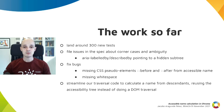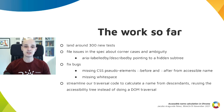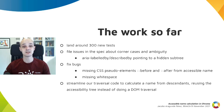We fixed bugs. The most visible one was about CSS pseudo-elements 'before' and 'after', which were missing from the accessible name. And finally, the most technically complex task: we streamlined our traversal code to calculate a name from descendants, reusing the accessibility tree instead of doing a new DOM traversal every time. I'm still working on this, but I hope it's landed by Blink on date. This change had a lot of side effects that sometimes exposed existing bugs that we are also fixing, but it is worth the effort because it clears up our code, it's faster and fixes bugs.